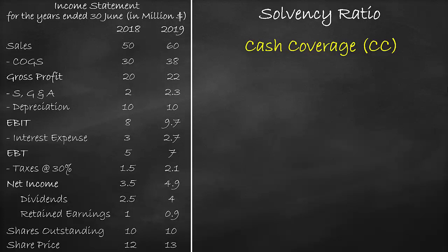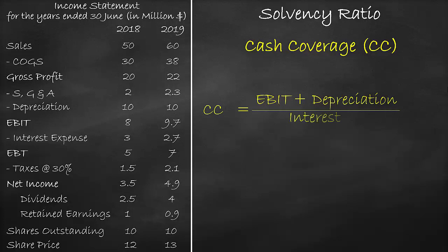Consequently, the cash coverage ratio is calculated as earnings before interest and tax plus depreciation, all divided by interest expense. We get the earnings before interest and tax, also known as EBIT, depreciation, and the interest from the income statement.